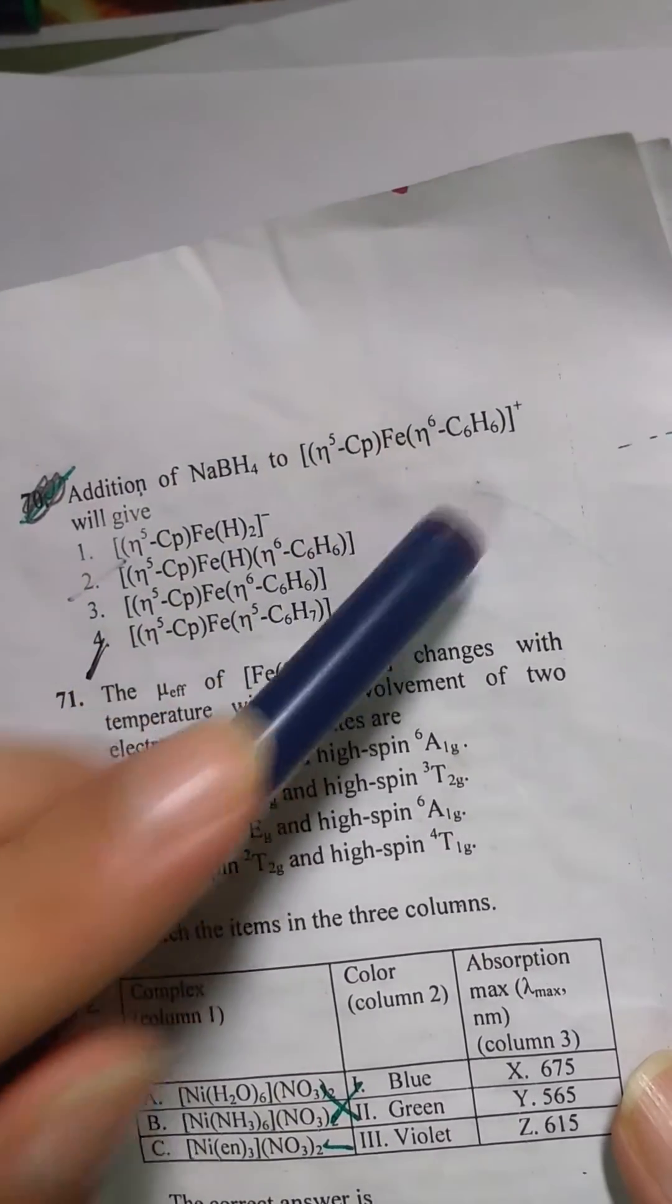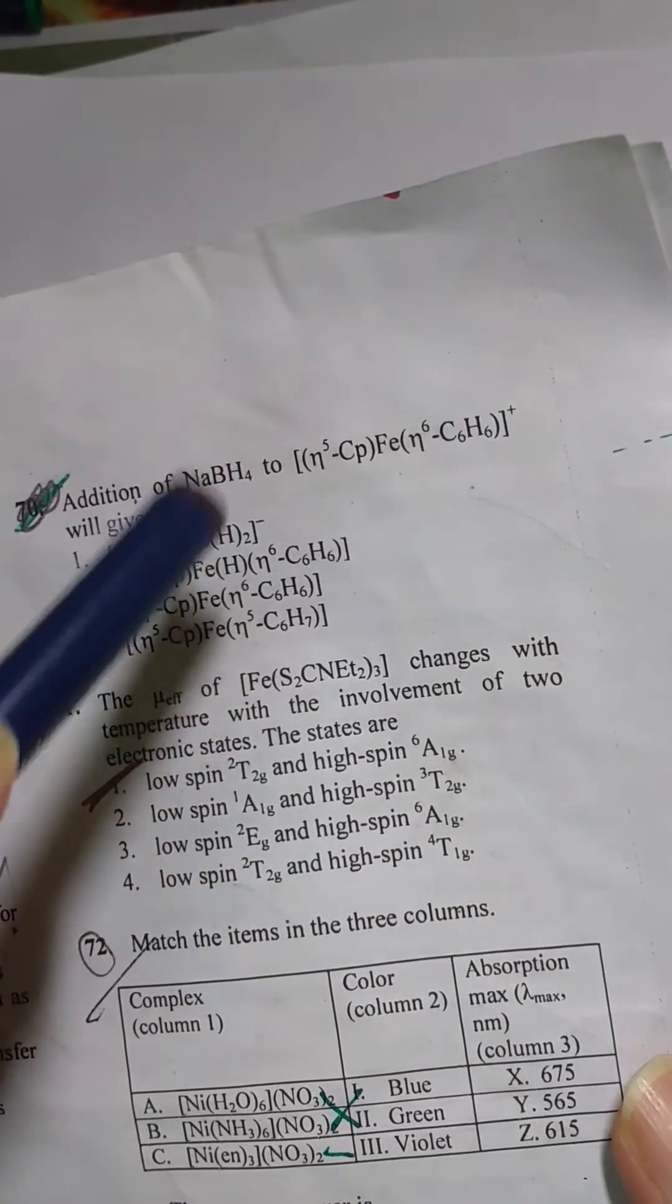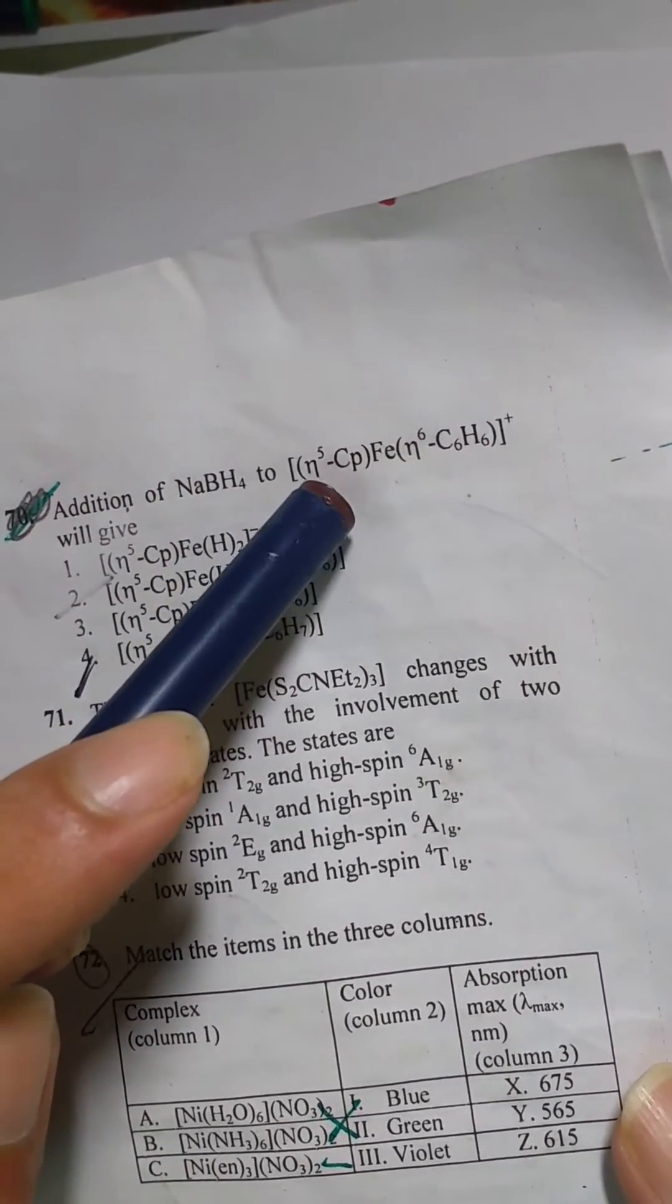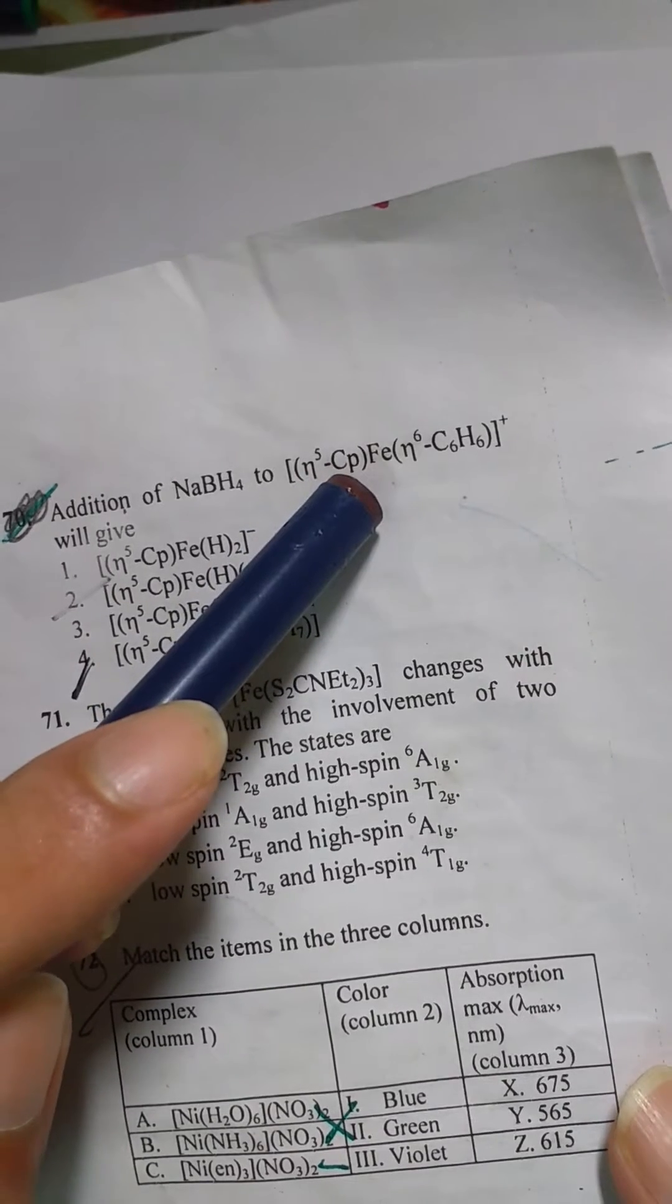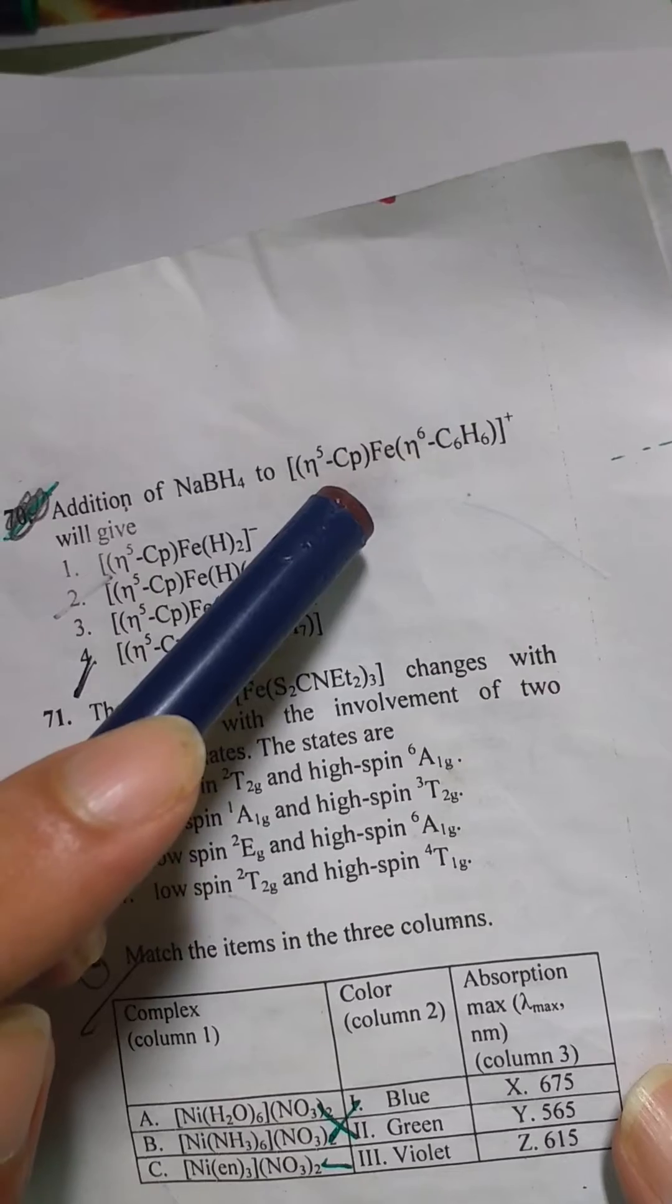Now if we calculate the number of electrons whether it satisfies the 18 electron rule or not. So we will see this gives 5 electrons. I am going by the neutral method. There are two methods so I prefer the neutral method.